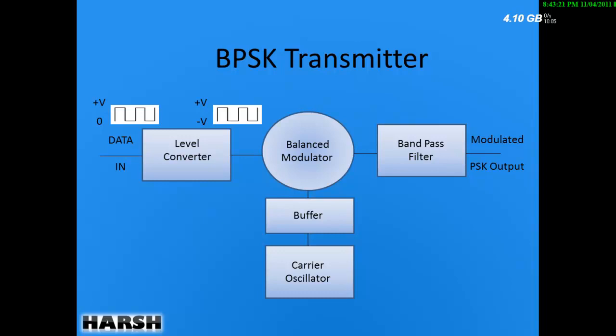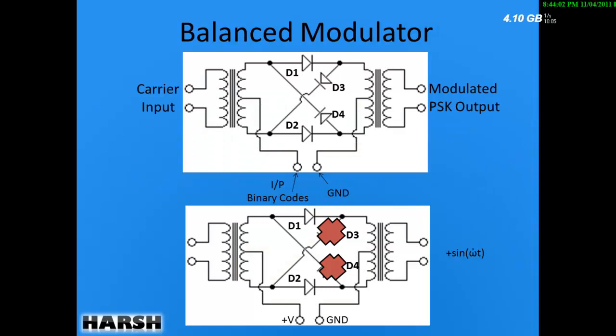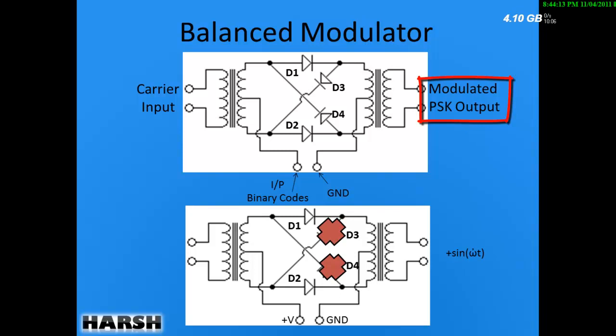In the balance modulator, the carrier is multiplied with the level-converted signal, producing the PSK output. For +V input, it gives a +90 degree phase shift, and for -V input it gives a -90 degree phase shift — or alternatively +180 degrees and 0 degrees depending on the technique used. After this, the signal passes through a band-pass filter which limits it to the required band and removes harmonics. We then get the modulated PSK output. The balance modulator used here is a ring modulator, with carrier input on one side and modulated PSK output on the other.